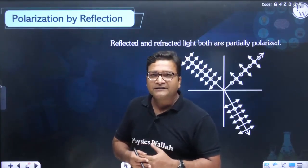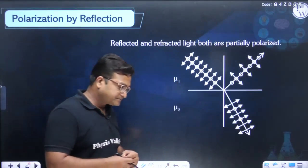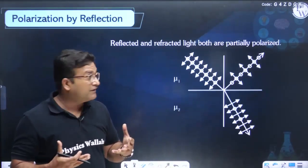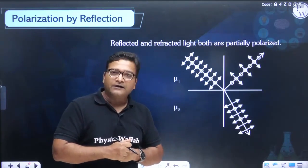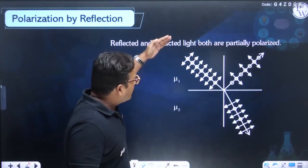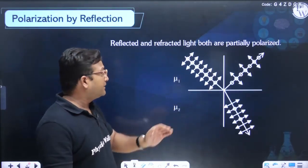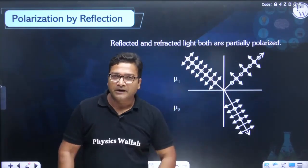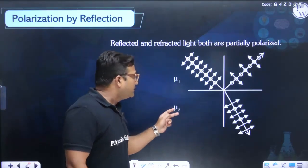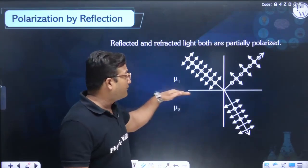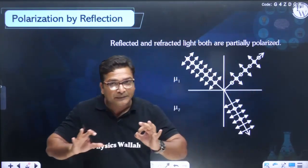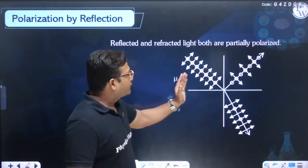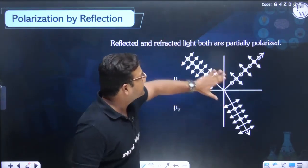An act of converting ordinary or unpolarized light into polarized light is called polarization. If you have a method of converting unpolarized light into polarized light, this method is called polarization. There are a few methods of polarization. Two are very important as far as your exams are concerned, and I am discussing both. You will surely find questions on these two methods in your exams.